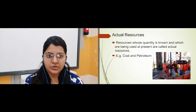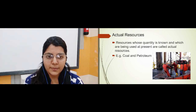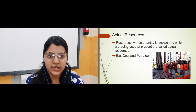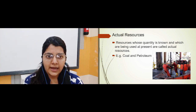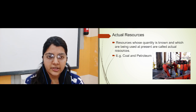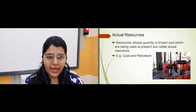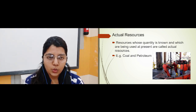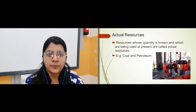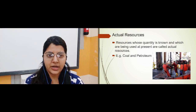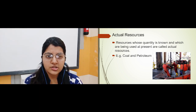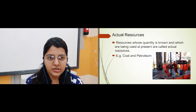For example, petroleum. We know that there is petroleum present in West Asia, and there is a plant set up over there with people running it. So petroleum in West Asia is an example of actual resources, where the quantity is known and we are using it in the present.